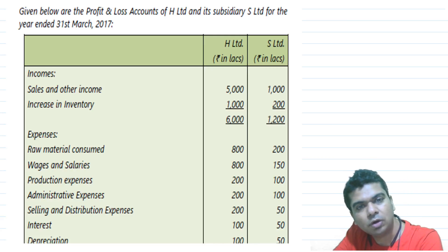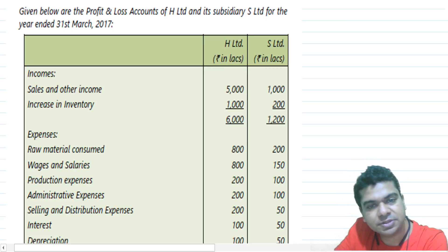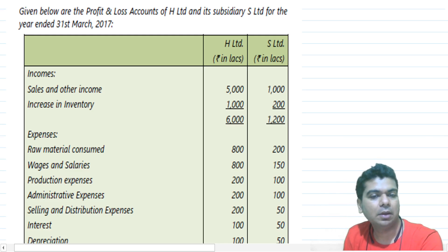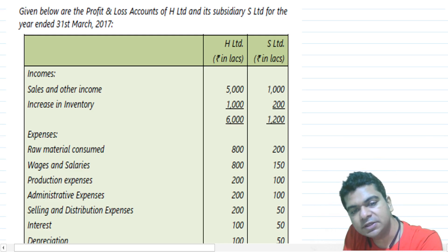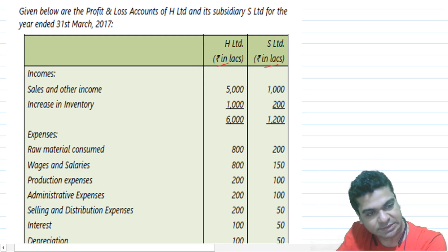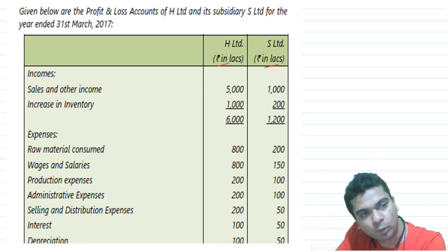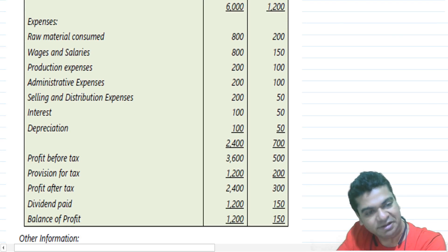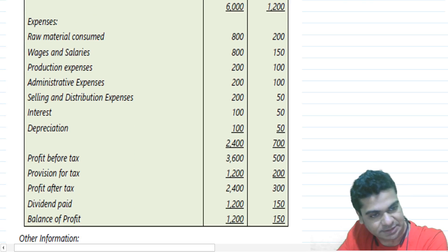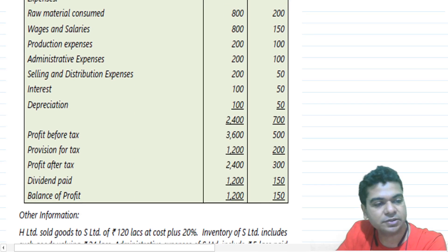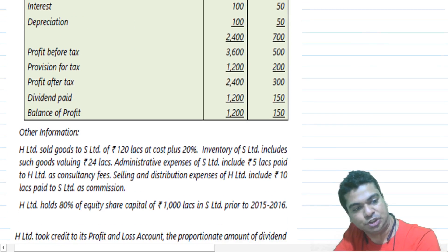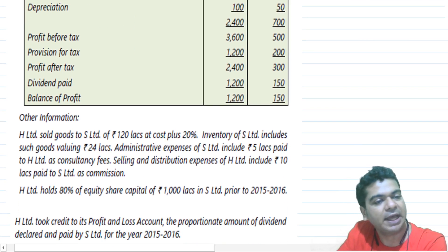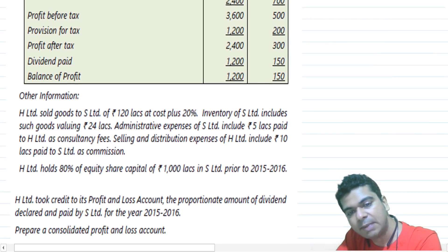Given below are the profit and loss accounts of H Limited and its subsidiary S Limited for the year ended 31st March 2017. Figures are in lakhs of rupees. The items include sales and other income, increase in inventory, and expenses such as raw material consumed, wages and salaries, production expenses, administrative expenses, selling and distribution expenses, interest, and depreciation. Profit before tax, provision for tax, profit after tax, dividend, and balance of profit are also given.